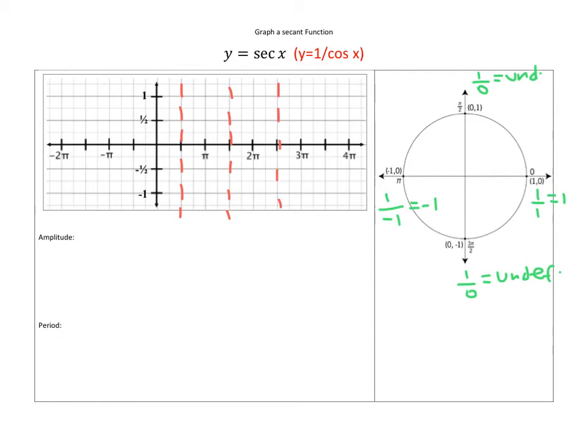That way I can show more of the graph. Now when I have the asymptotes, all I need to do is show the points. To show the points, I'm going to start at 0.